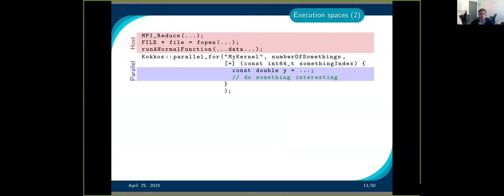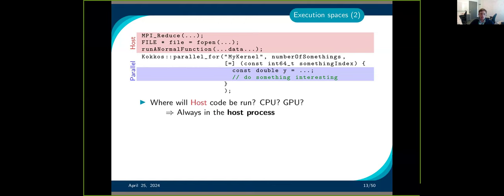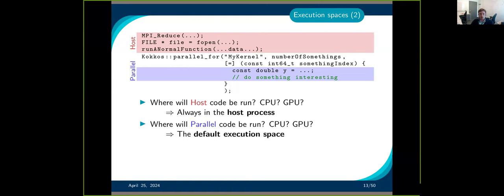In general your code will have some host code — like IO — that always runs on the CPU, and then something you want to run in parallel. Where does the parallel code run? If you don't specify, it runs on the default execution space, which Kokkos decides depending on how you compiled it. If compiled with a GPU backend like CUDA, that becomes the default. If compiled with OpenMP but not CUDA, OpenMP is the default. With no backend enabled, it's serial.